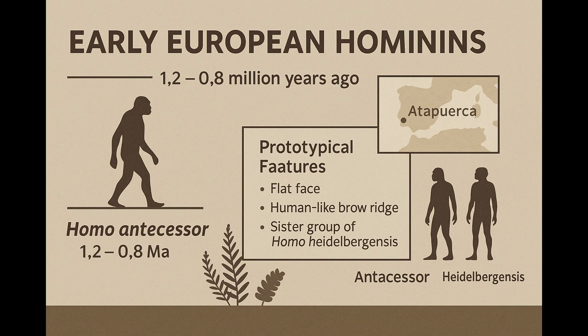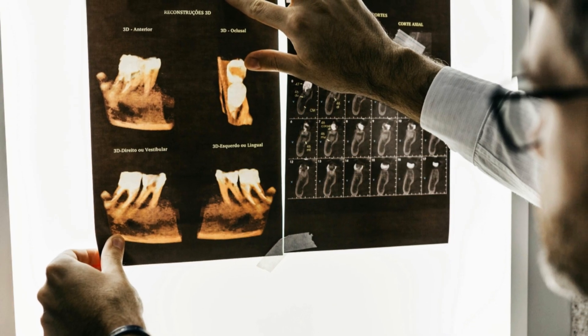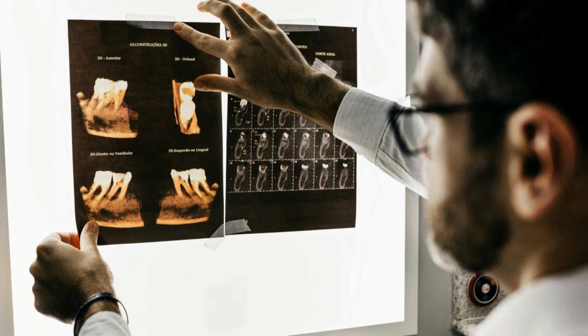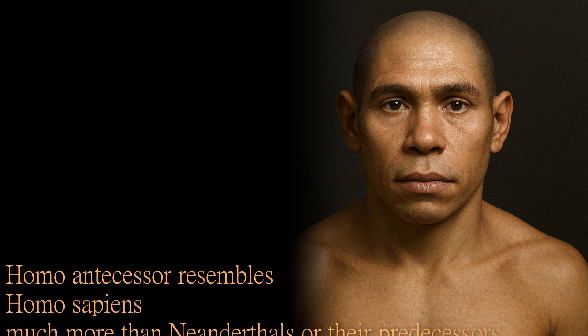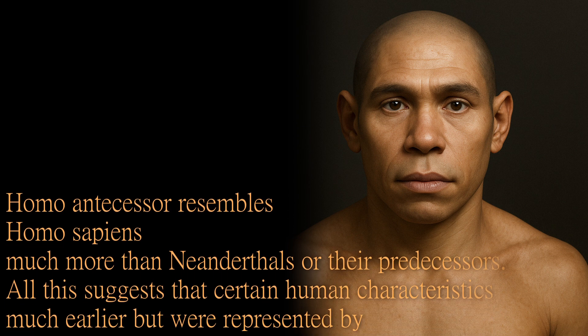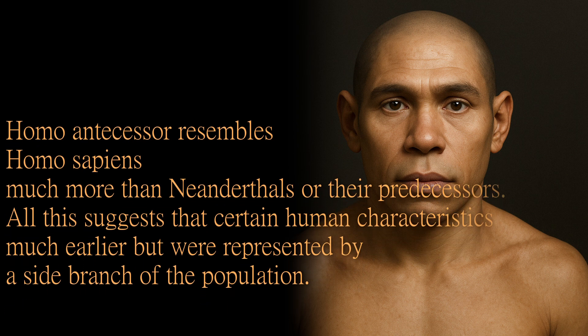However, later studies have nuanced its role. According to the latest paleoproteomic ancient protein analysis, Homo antecessor may have been a sister group to the Homo sapiens-Neanderthal lineage, rather than their direct ancestor. In 2020, Frido Welker and colleagues, by sequencing 800,000-year-old tooth enamel proteins, demonstrated that Homo antecessor is in close phylogenetic relation to modern humans and Neanderthals, as well as the Denisovans — that is, it likely represents a sister group to a common ancestor.